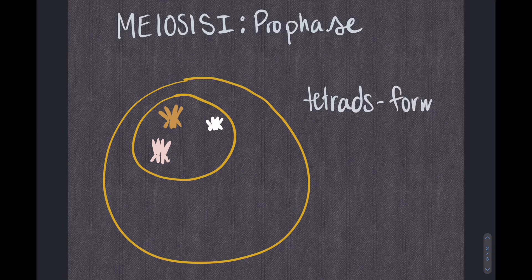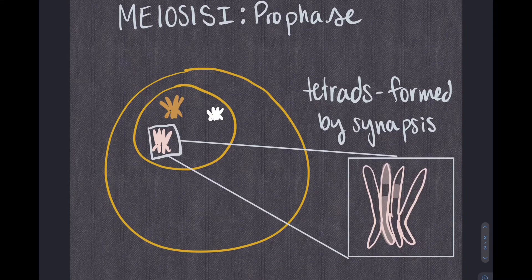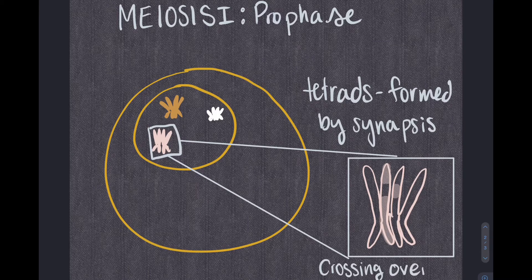The formation of tetrads is also called synapsis. Something very important about tetrads is that they enable the homologous chromosomes to exchange segments of DNA, a process called crossing over. This process increases the genetic variation of the gametes.